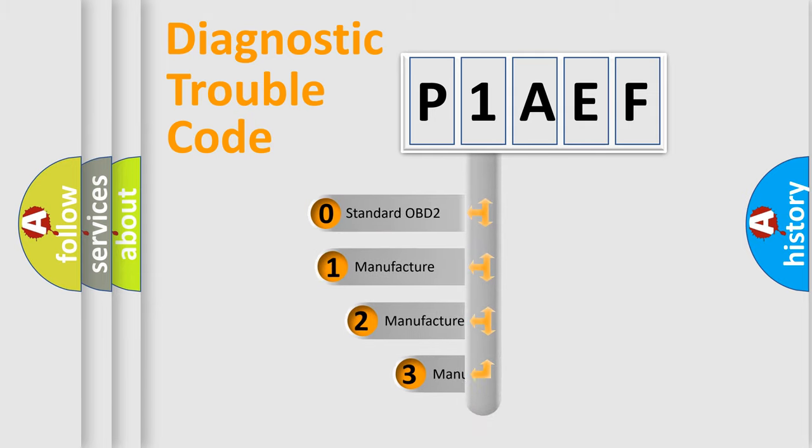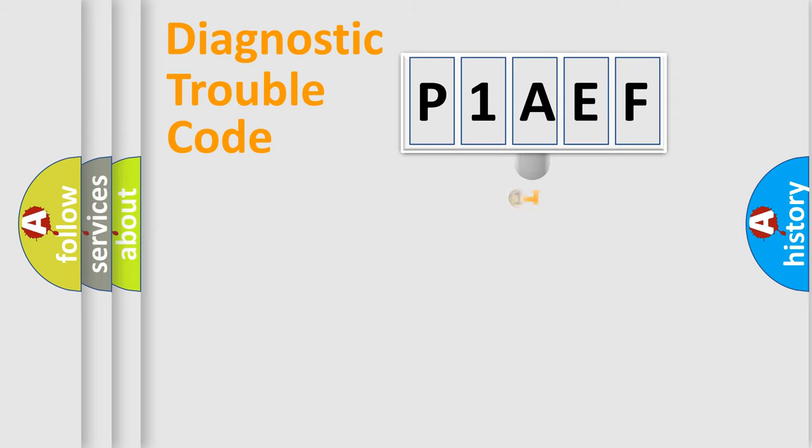If the second character is expressed as zero, it is a standardized error. In the case of numbers 1, 2, or 3, it is a manufacturer-specific expression of the car-specific error.